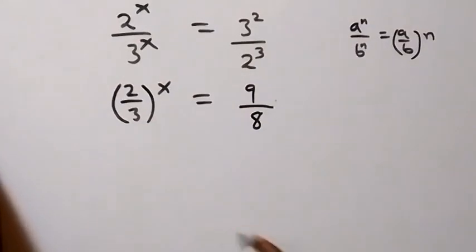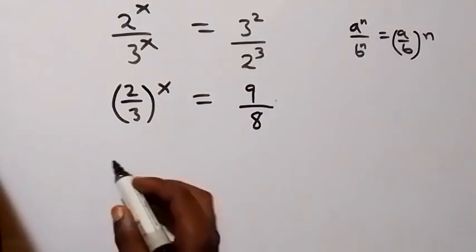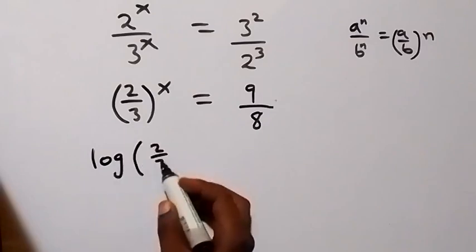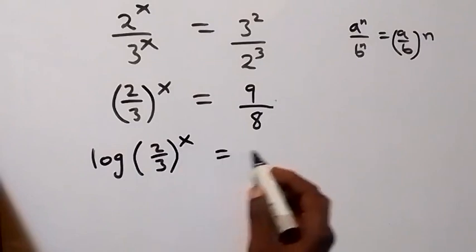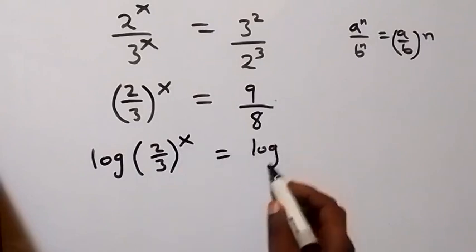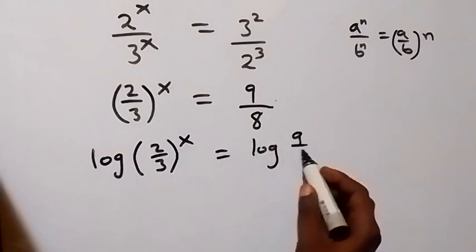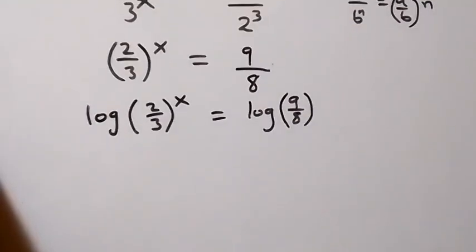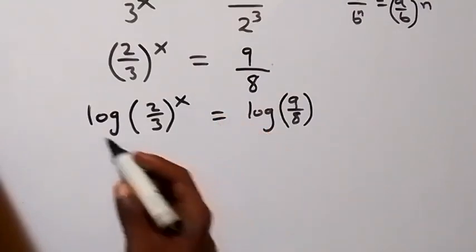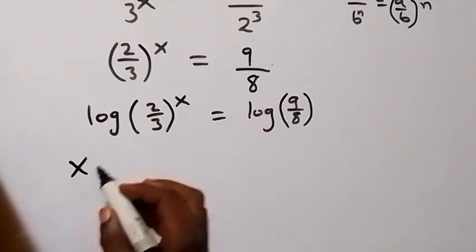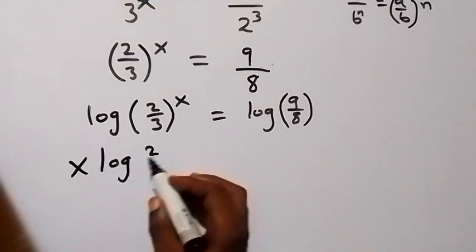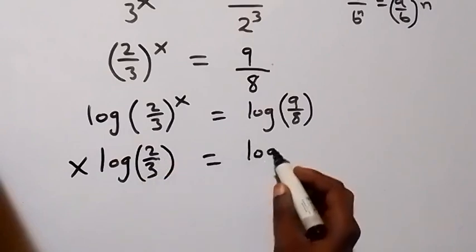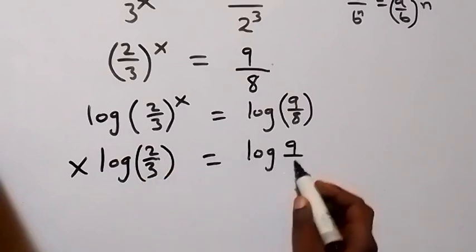And then the next step from here, we can take the log on both sides. So we have log of 2 over 3, raised to power x, equals to log 9 over 8. Then from the power law of logarithms, this power of x comes to the front here. So we have x log 2 over 3, then equals to log 9 over 8.